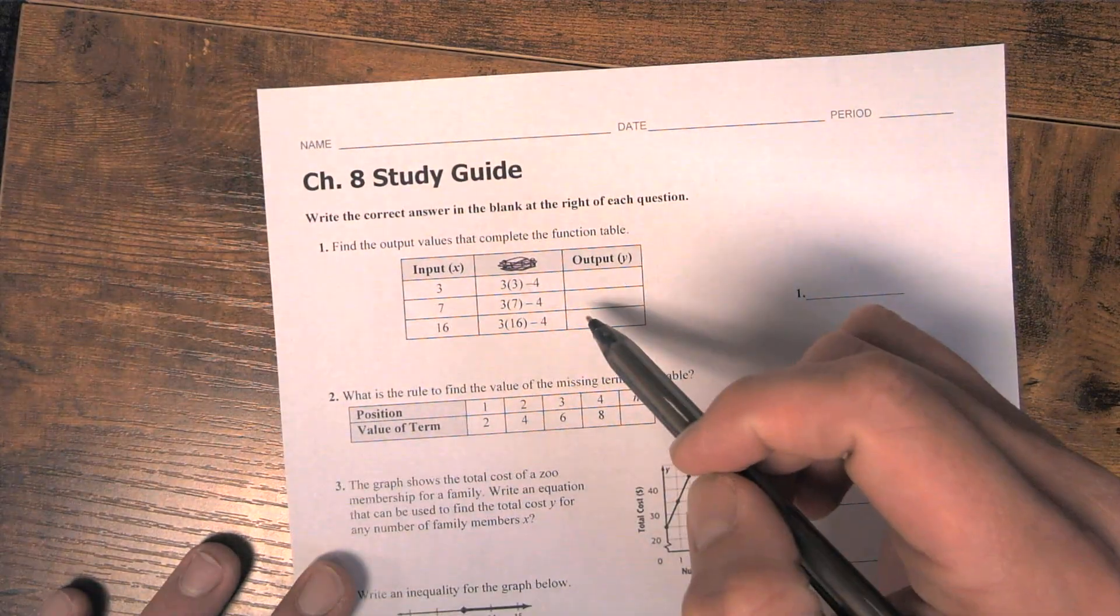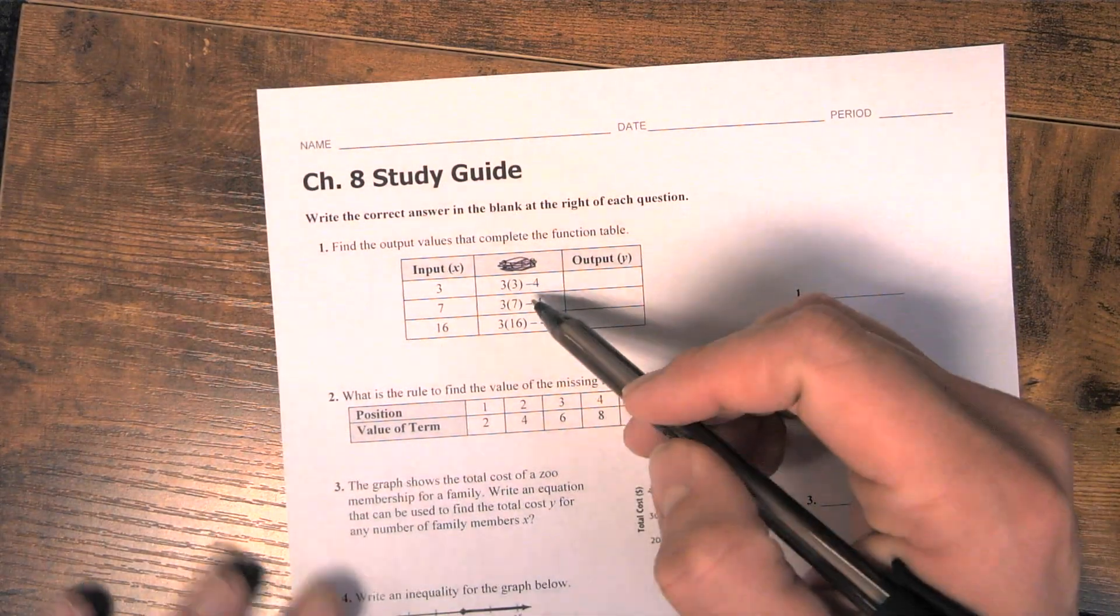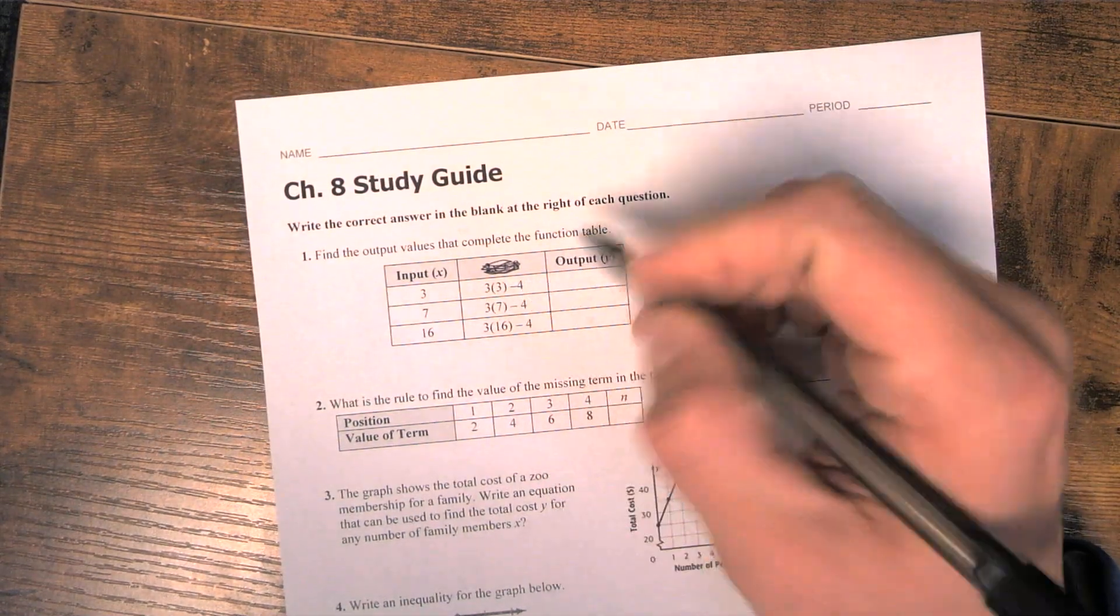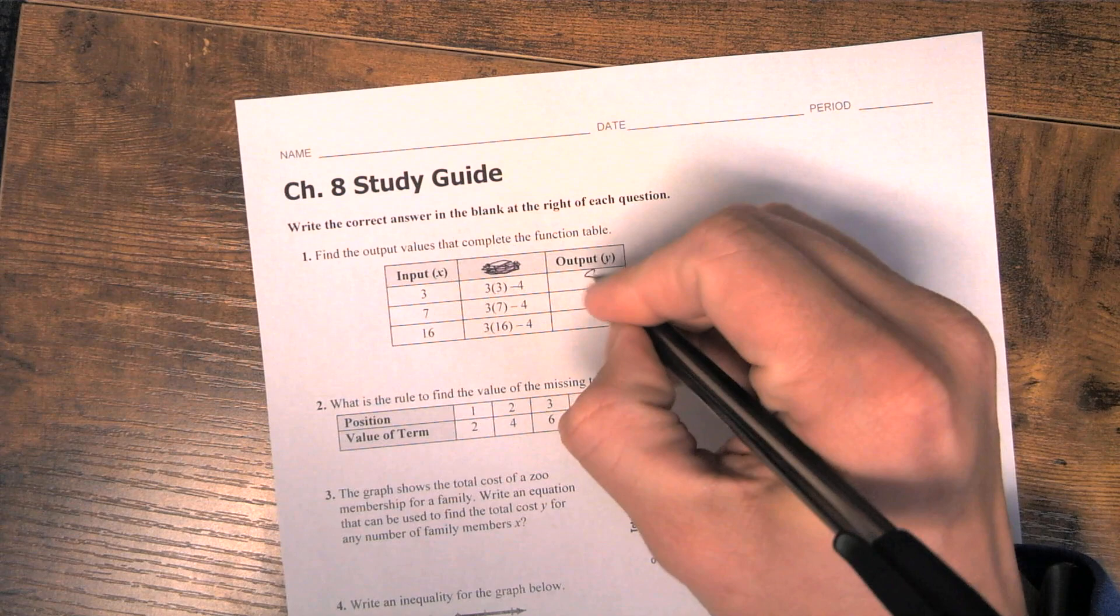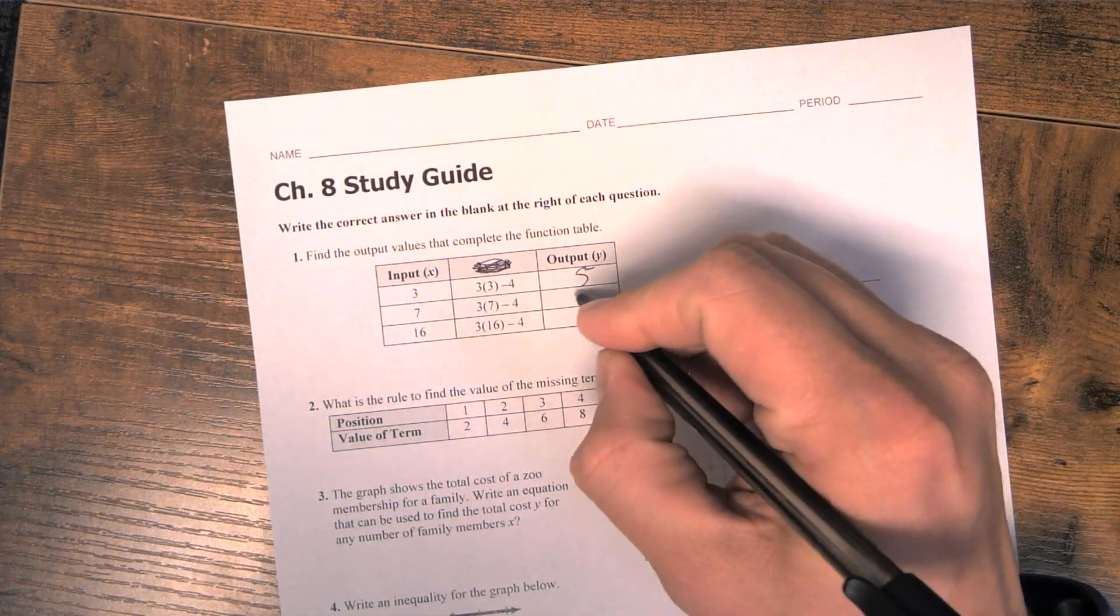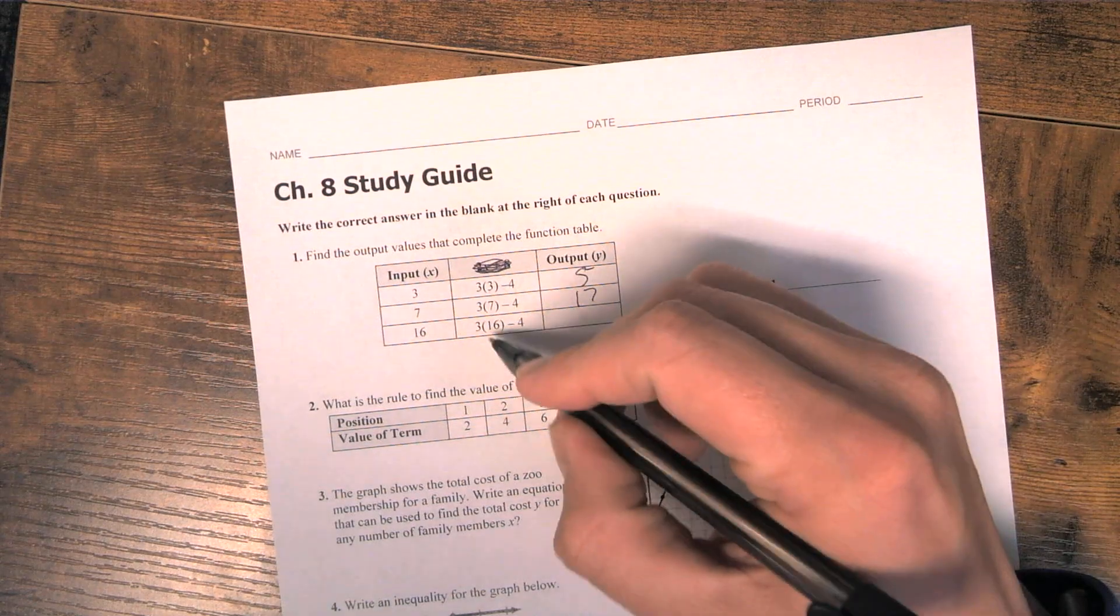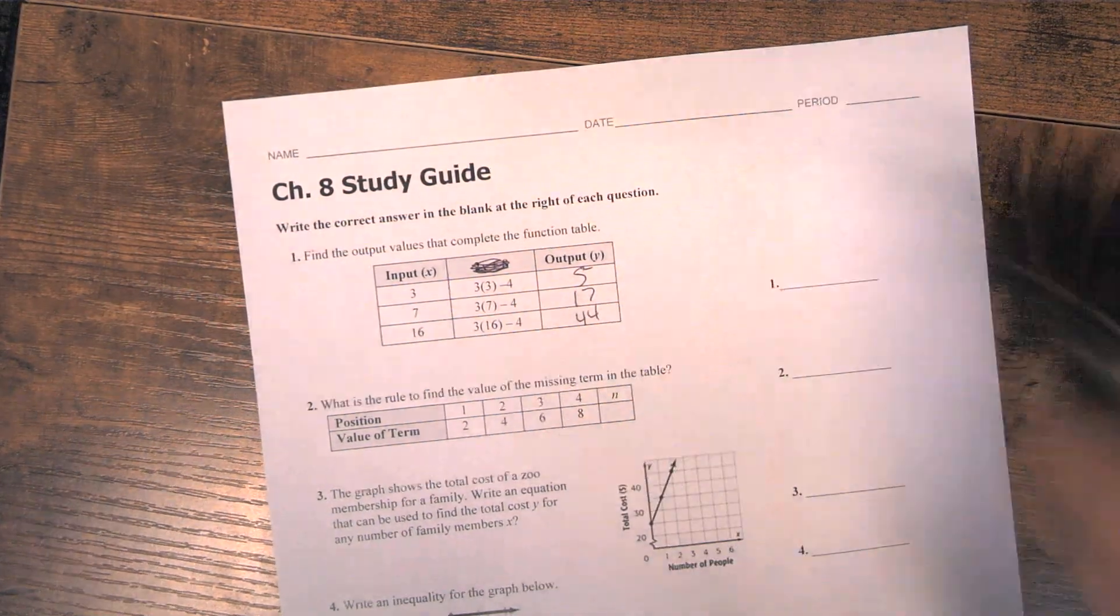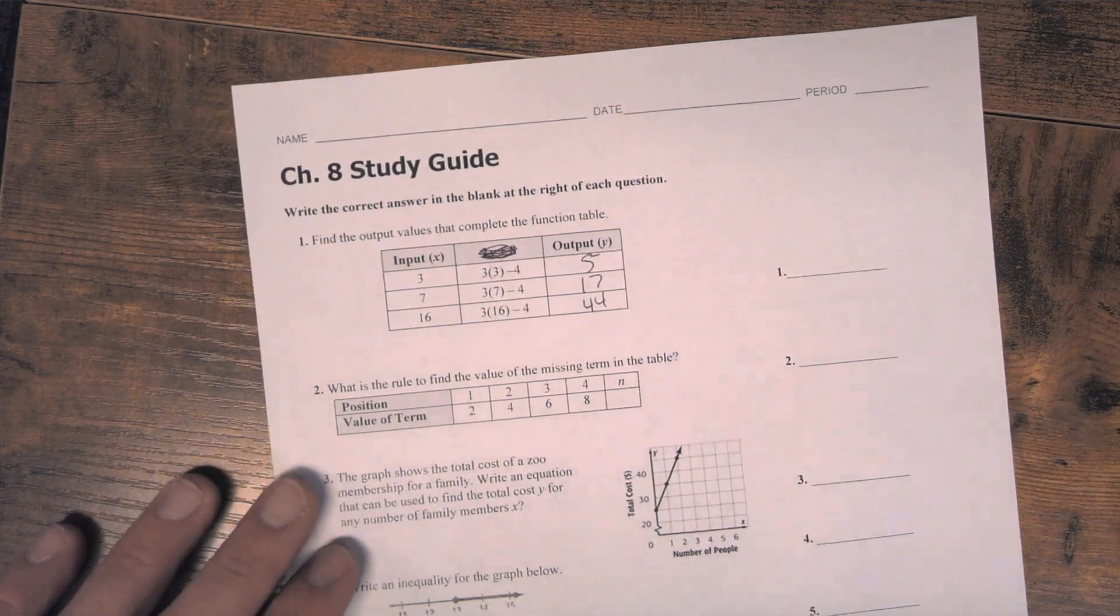The first one is just filling in a function table. They've already filled in the function rule, you just got to solve the output. So 3 times 3 minus 4, that would be 9 minus 4 is 5. 3 times 7 minus 4 is 21 minus 4, 17. 3 times 16 is 48, minus 4, 44. And that's all you got to do for number 1.